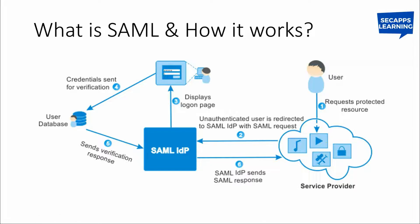For example, let's say you are using Facebook and Facebook is integrated with SAML. When you open the Facebook URL, you are automatically redirected to the SAML logon page. You provide your Facebook username and password, it goes to the database for verification, and after verification your SAML Identity Provider verifies the identity and sends a response to Facebook. Facebook then grants you the access — here Facebook is acting as the Service Provider.